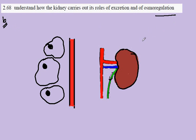Let's first explain osmoregulation — 'osmo' referring to osmosis and 'regulation' to control. Here are cells in the body, and ideally the tissue fluid which surrounds these cells, like so, must be isotonic with the cytoplasm of these cells.